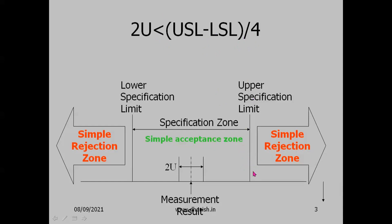The concern is when the measurement result is very near the border — there is a probability the actual value may be outside the specification zone. However, under the MIL standard rule, if the average is within the specification zone you accept it; if outside you reject it, ignoring that probability.